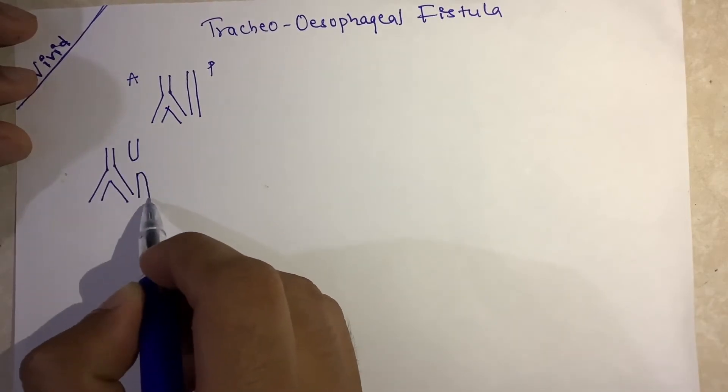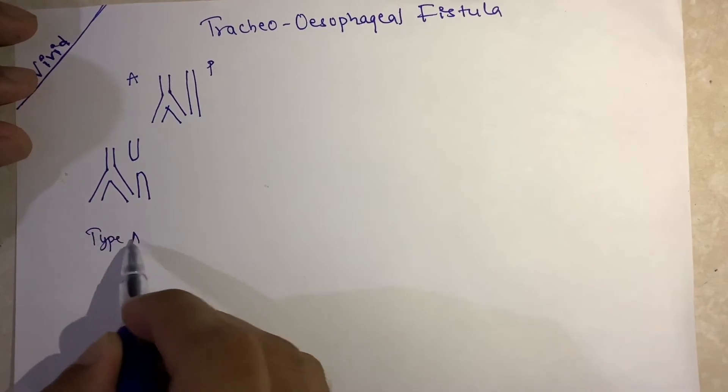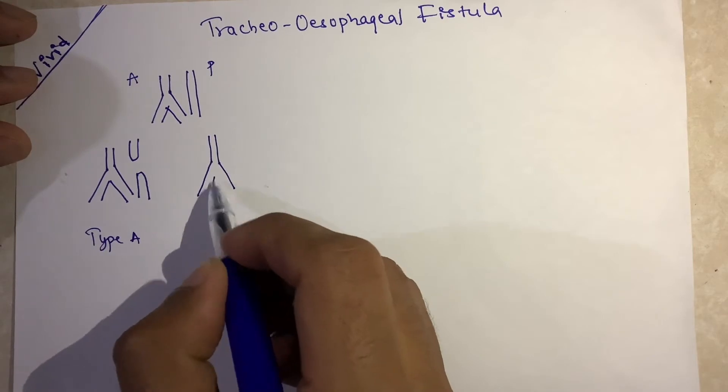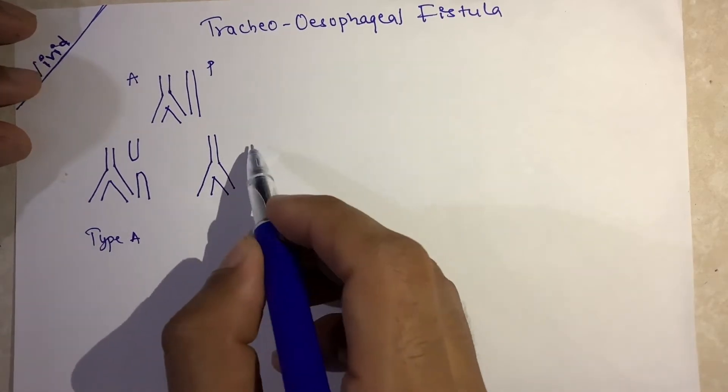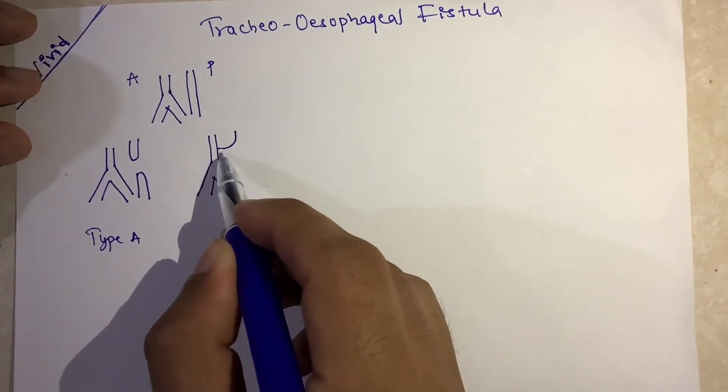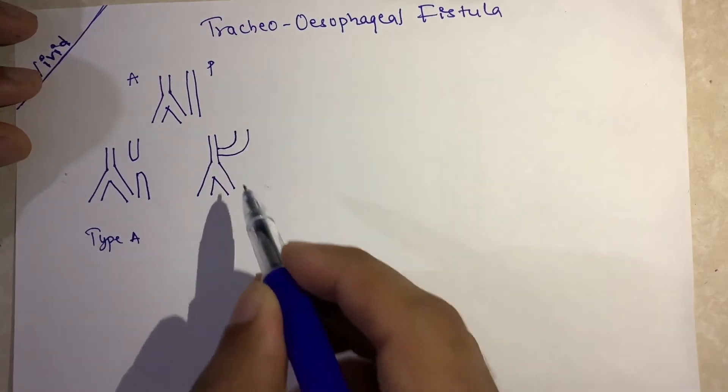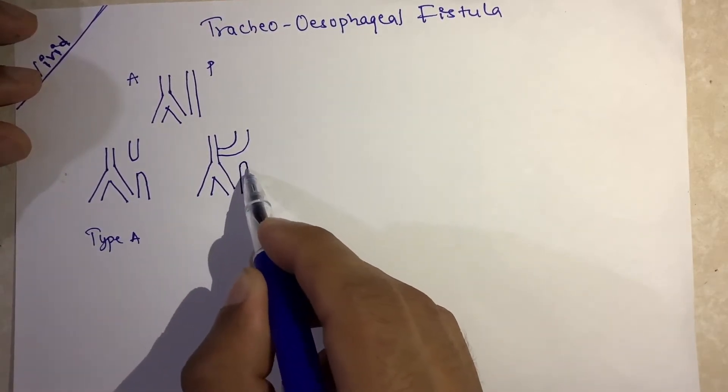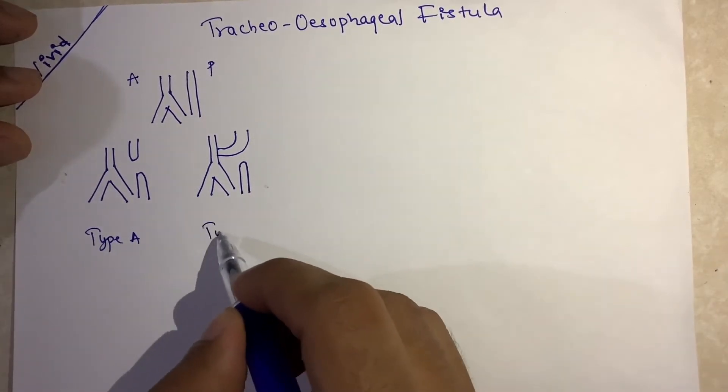This is type A. In type B, the proximal part of the esophagus makes continuity with the trachea and the distal is blind. This is type B.